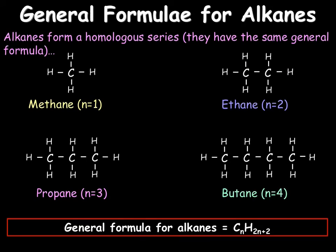Using the general formula, we can work out the number of hydrogens, providing that we already know the number of carbons. As methane has one carbon — meth meaning one — we can make n equal to 1. If we then do 2 times 1 plus 2, this gives us 4. So C1H4, which is the formula for methane. This will work regardless of the size of the alkane.